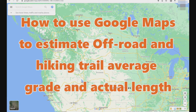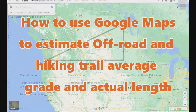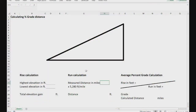This video shows you how to use Google Maps to estimate average grade and distance for off-road trails and hiking trails. I'm going to use this calculator to take the measurements we make in Google Maps and convert them to average grade, which is, in other words, the slope of the trail.